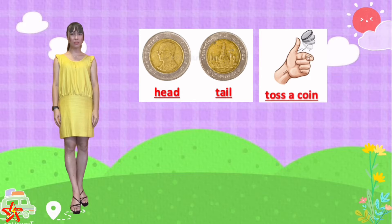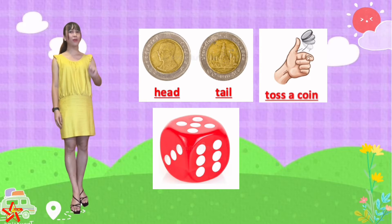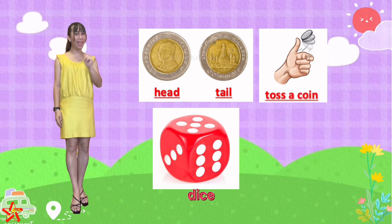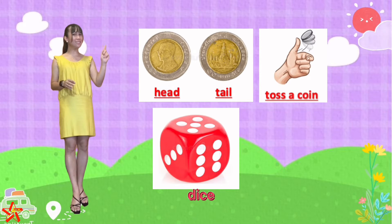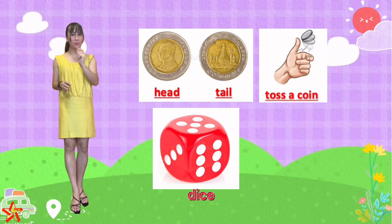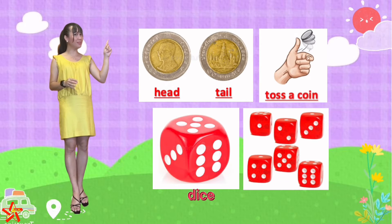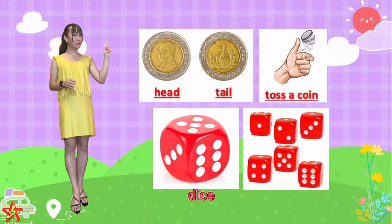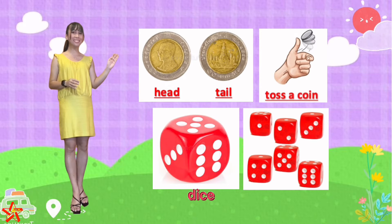Another picture that I would like you to look at — what is this? A dice. What's the color? It's red and white. Do you know that this dice has six sides and it represents some numbers? That side, there is only one dot. Next, two dots. Three dots. And then we have four, five, and six.